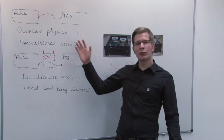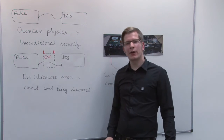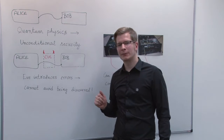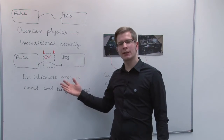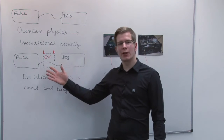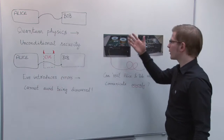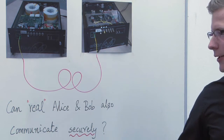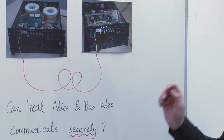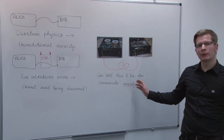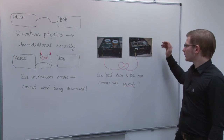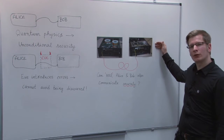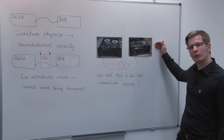A security proof for such a scenario requires certain model assumptions for the devices of Alice and Bob. This works fine in theory, but what about in practice? In the next minutes, we'll ask the question: can real Alice and Bob communicate securely? And we'll show you that real device properties should be taken into account in the security proof. Otherwise, we'll get security problems.